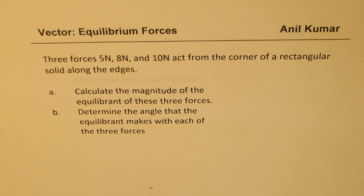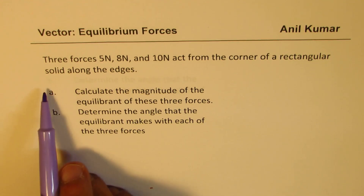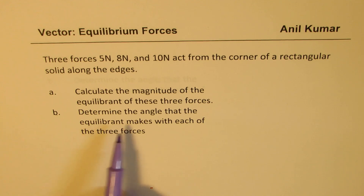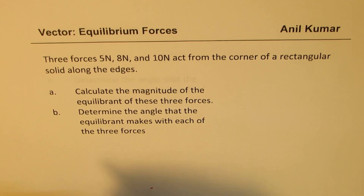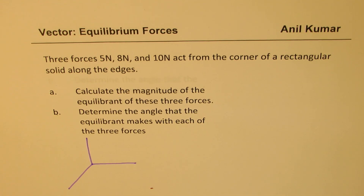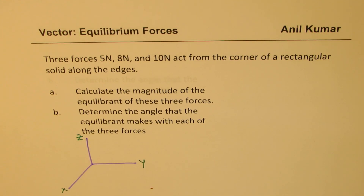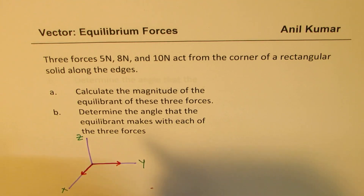Question two: three forces — 5 Newtons, 8 Newtons, and 10 Newtons — act from the corner of a rectangular solid along the edges. Calculate the magnitude of the equilibrant of these three forces, and determine the angle that the equilibrant makes with each of the three forces. Let's sketch and understand the situation. The three forces act along the x, y, and z directions.